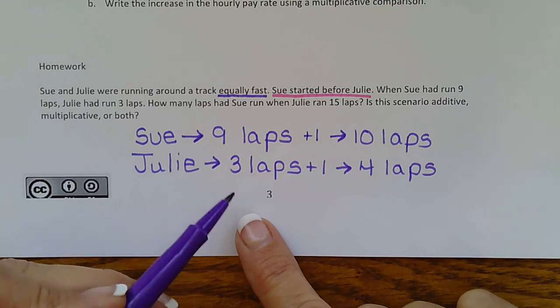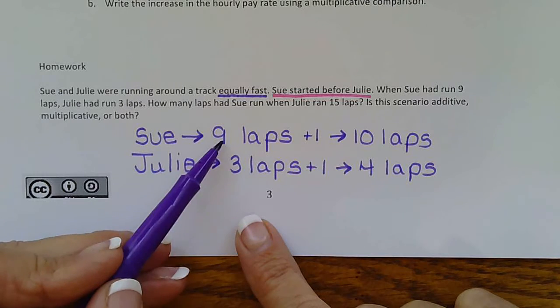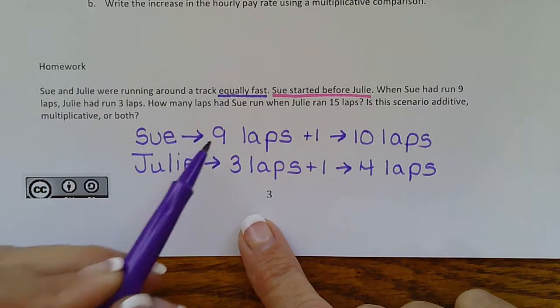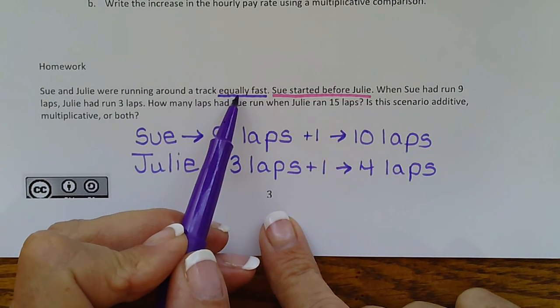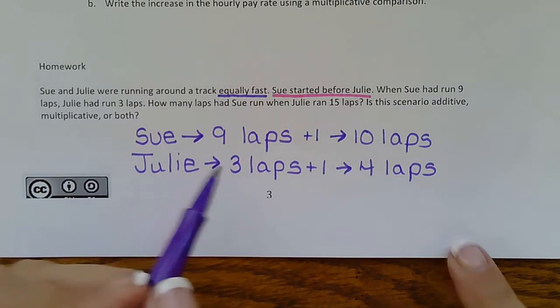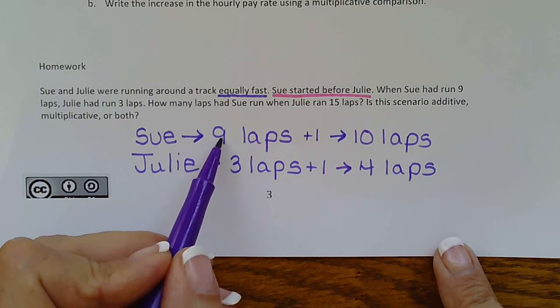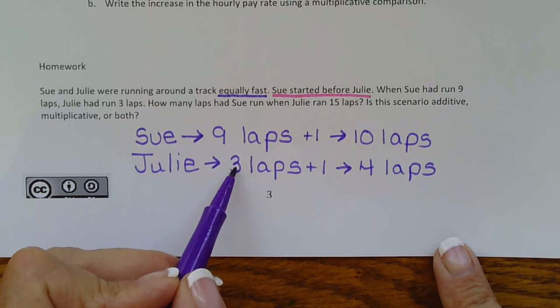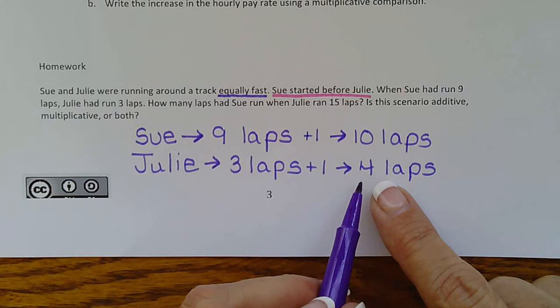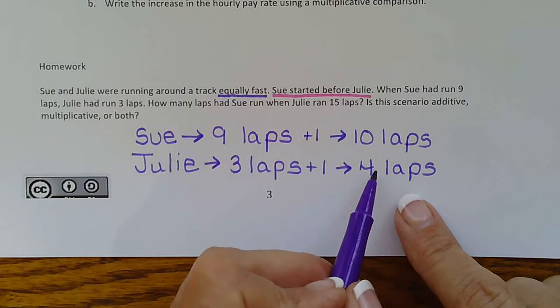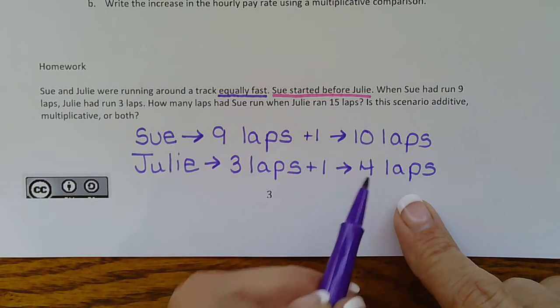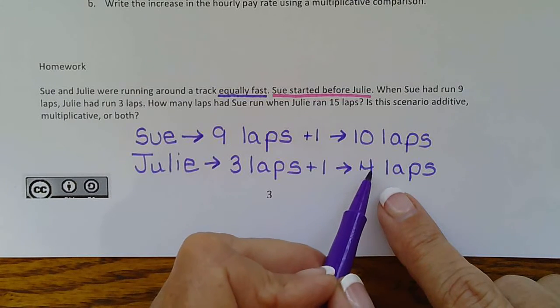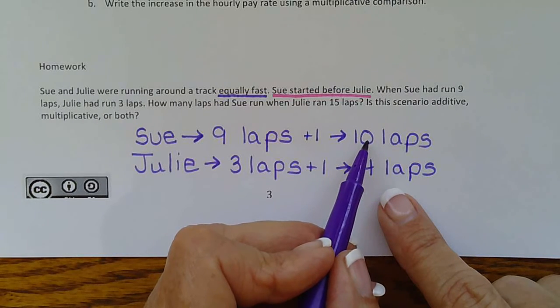So here we said Sue was six laps ahead of Julie. And remember, she won't get any further than six laps because they're running equally fast. Sue was three times further than Julie. So let's look here and see which one of those applies. Is Sue six laps ahead of Julie? Yes. Is Sue three times further than Julie? No.